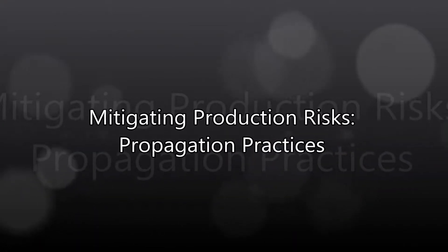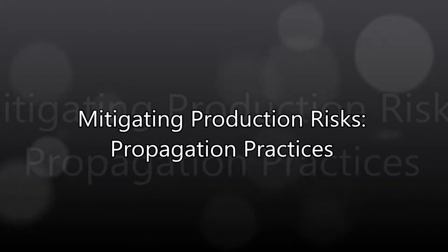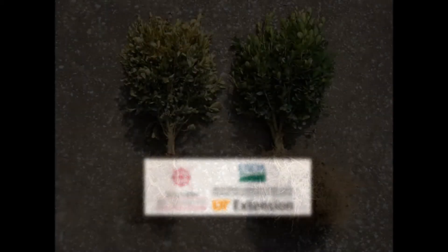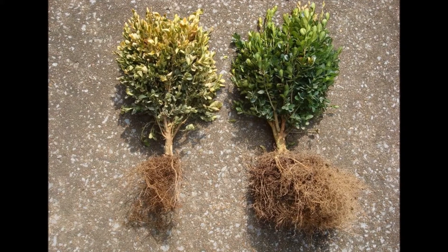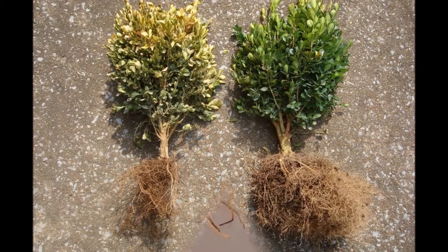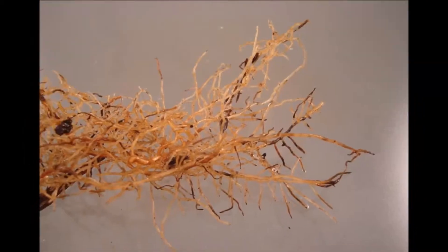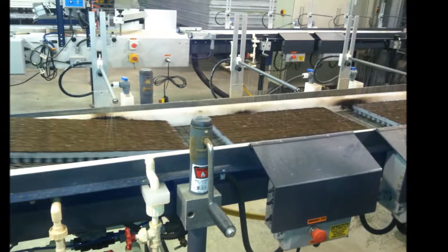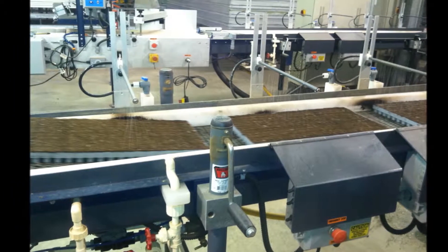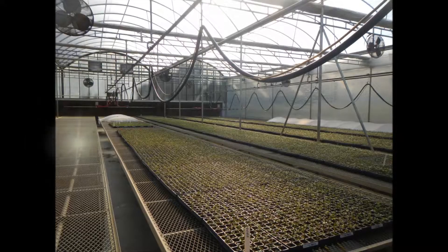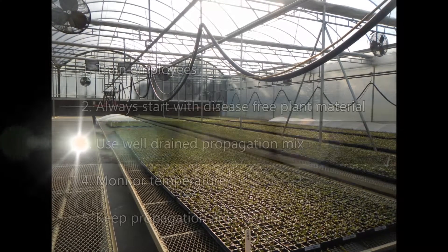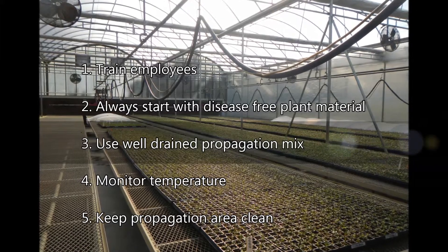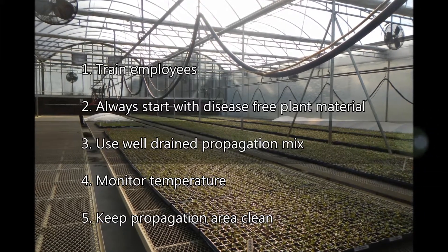Mitigating Production Risks: Propagation Practices. When propagating, the biggest concern is preventing disease. A great first line of defense is to propagate on site. We're going to look at five other practices that will aid in preventing disease during propagation.